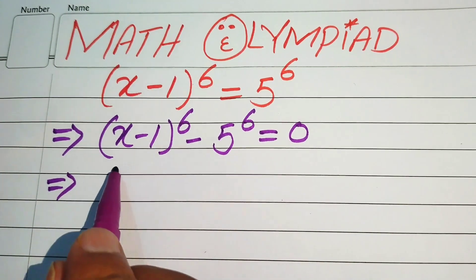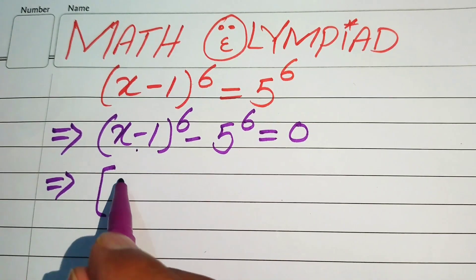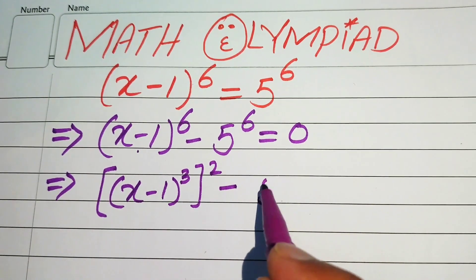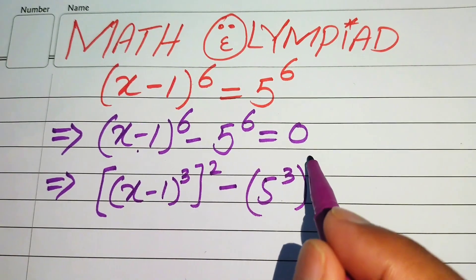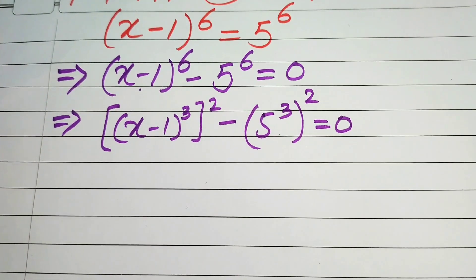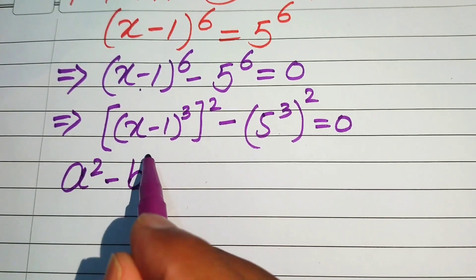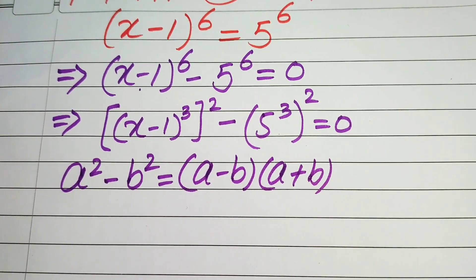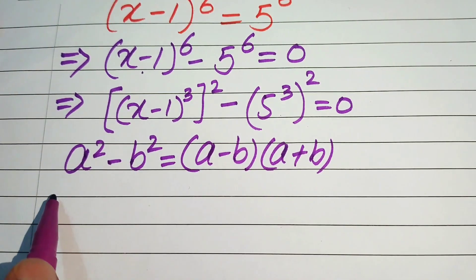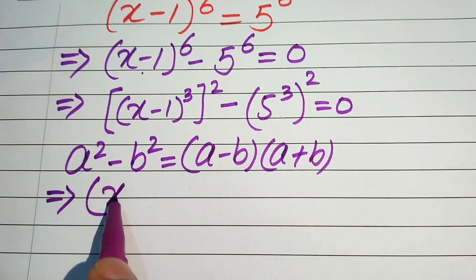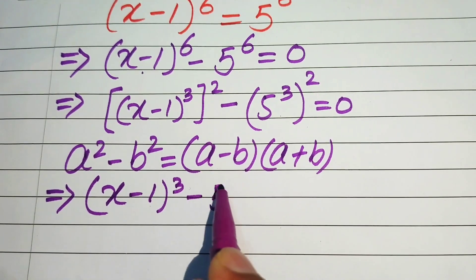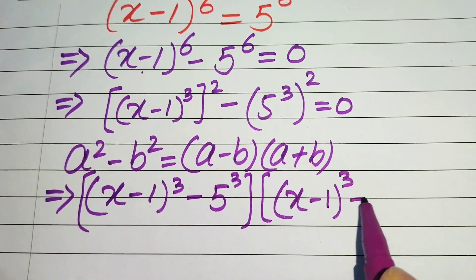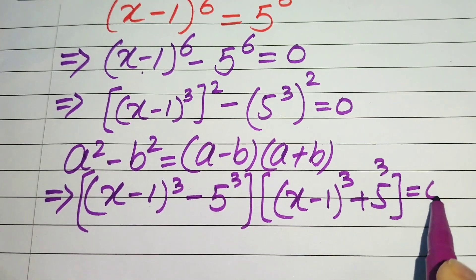Next, we rearrange the equation by writing (x minus 1) to the power of 6 as (x minus 1) cubed, whole squared, and similarly 5 to the power of 6 as 5 cubed, whole squared, giving us [(x-1)³]² minus [5³]² equals 0. We then apply the difference of squares identity: a² minus b² equals (a minus b)(a plus b), so the equation becomes [(x-1)³ minus 5³] times [(x-1)³ plus 5³] equals 0.